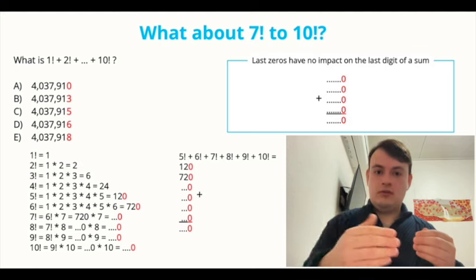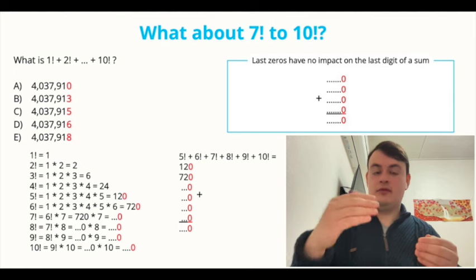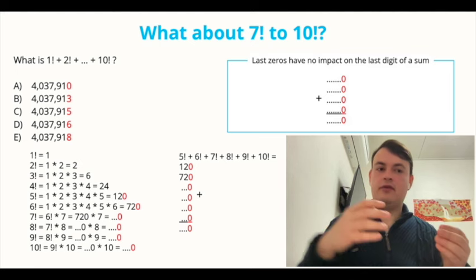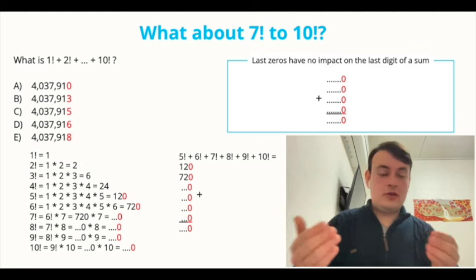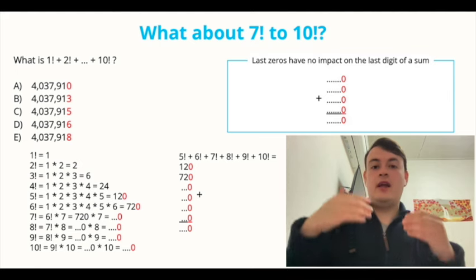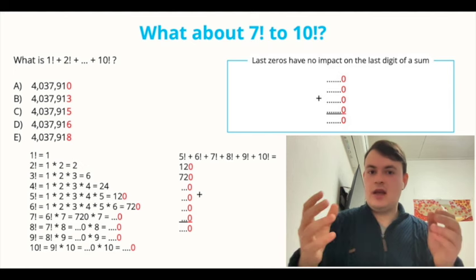If we continue looking at all the remaining factorials, we can see that, well, 8 factorial is 7 factorial times 8. Again, number ending with a zero times any other number will still end with a zero. So 8 factorial also ends with a zero. The same goes for 9 factorial and 10 factorial. They all end with a zero following the same rule.